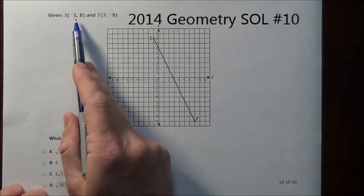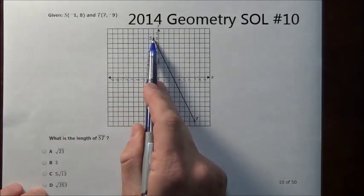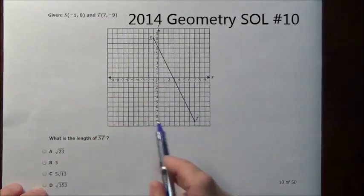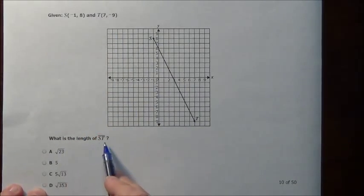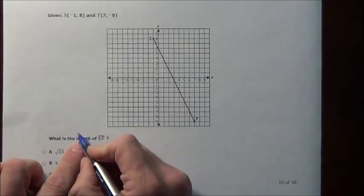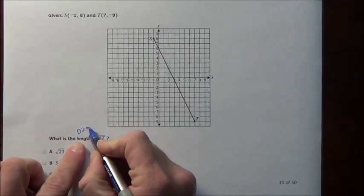Here's problem 10. It says given s is at negative 1, 8, so there's s at negative 1, 8, and t is at 7, negative 9. What is the length? Length just means what? Distance. We're looking for the distance.